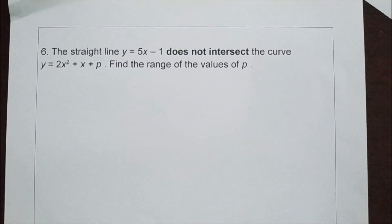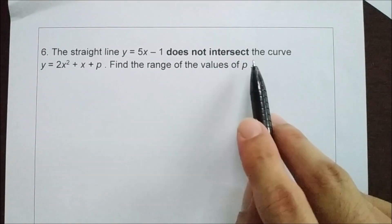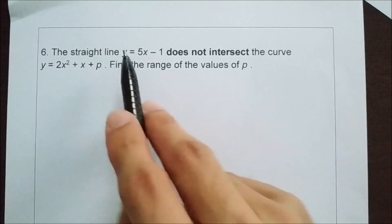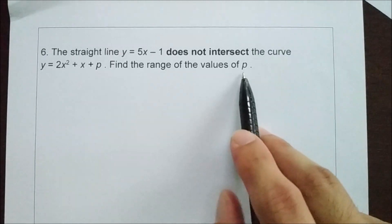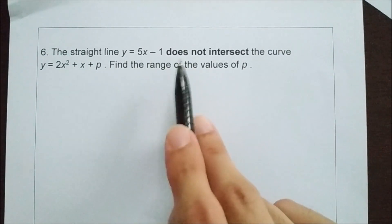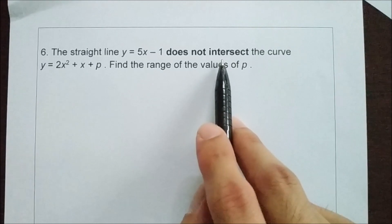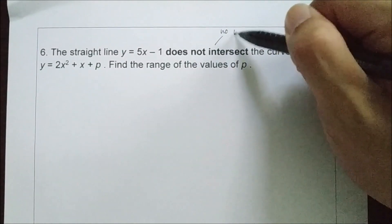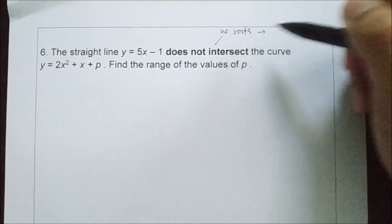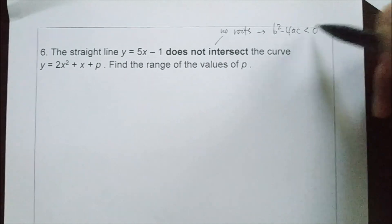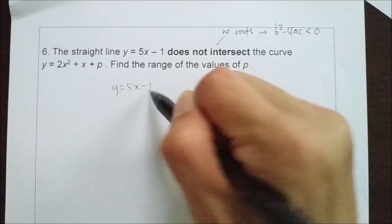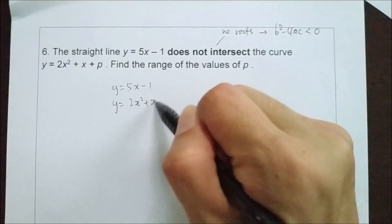We go to the last question: The straight line y equals 5x minus 1 does not intersect the curve y equals 2x squared plus x plus p. Find the range of values of p. If the straight line and the curve do not intersect, when you combine them you have no roots. Does not intersect implies no roots, and no roots implies the discriminant is less than 0. So we set y equals 5x minus 1 equal to y equals 2x squared plus x plus p, and solve using b squared minus 4ac less than 0.